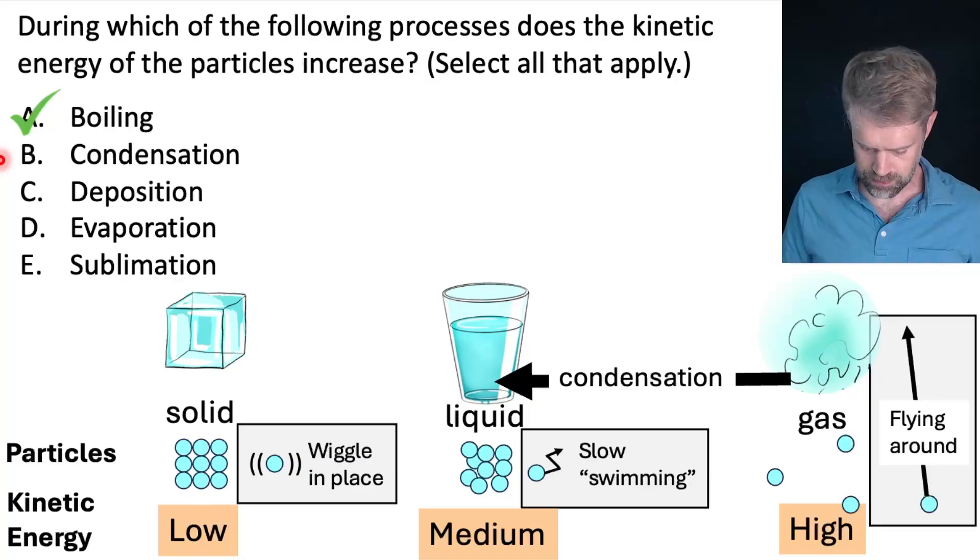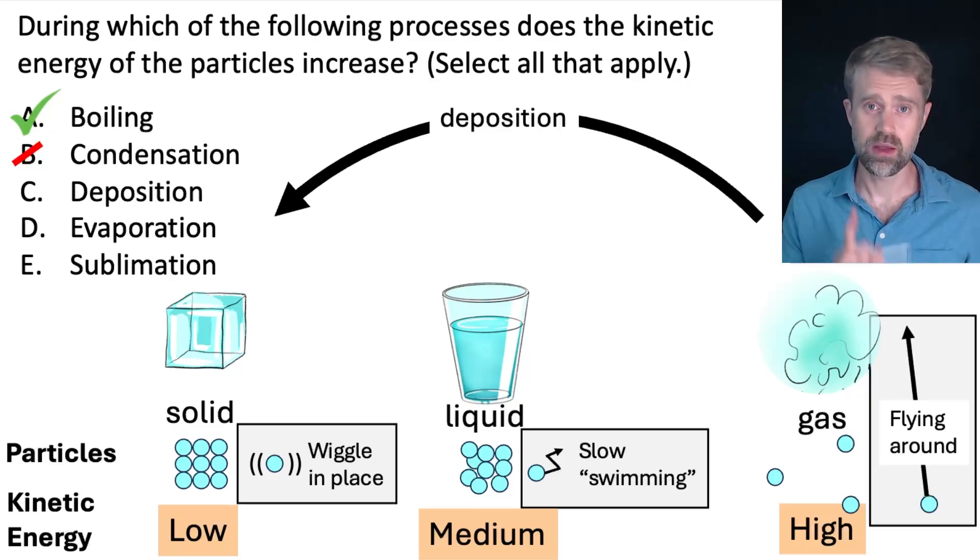Next. B. Condensation. That's kind of the reverse of boiling. We're going from gas to liquid. Kinetic energy decreases in this situation from high in a gas to medium in a liquid. We're not increasing. We're decreasing. Cross it off. C. Deposition. Gas directly to solid. Kinetic energy decreases. And it decreases a lot. It goes from high all the way to low. No increase. Cross it off.